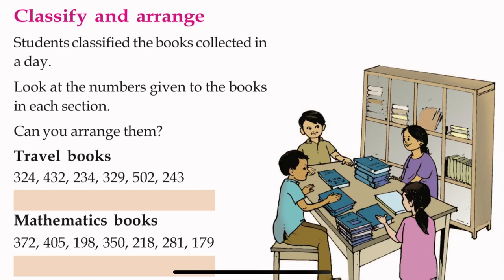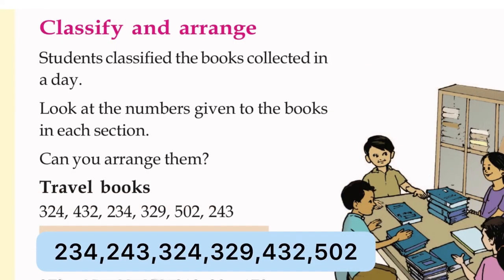324, 432, 234, 329, 502, 243. These are the book numbers. We can arrange from the smallest to largest number. We can write the smallest number first. So the answer is: